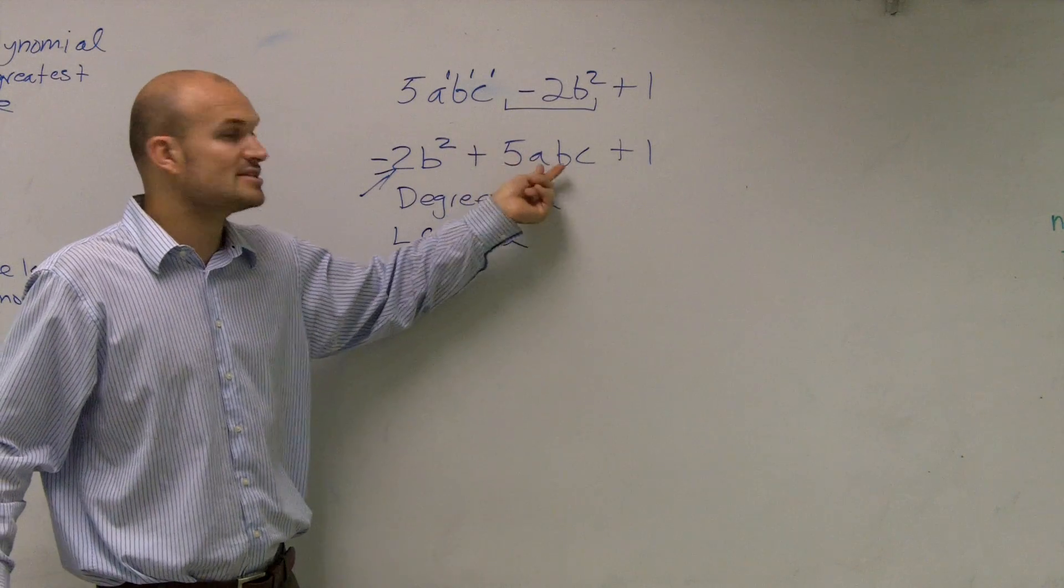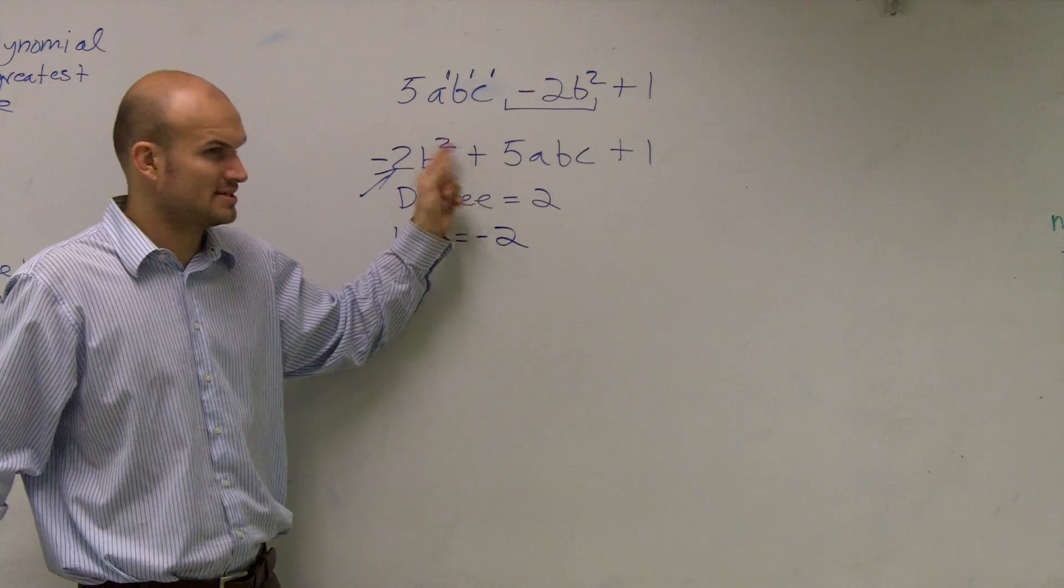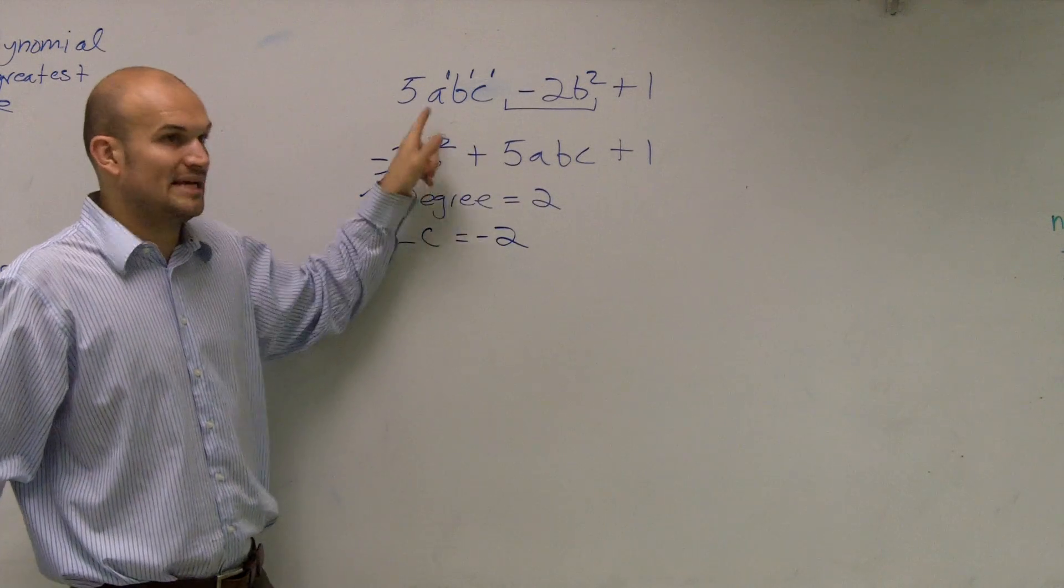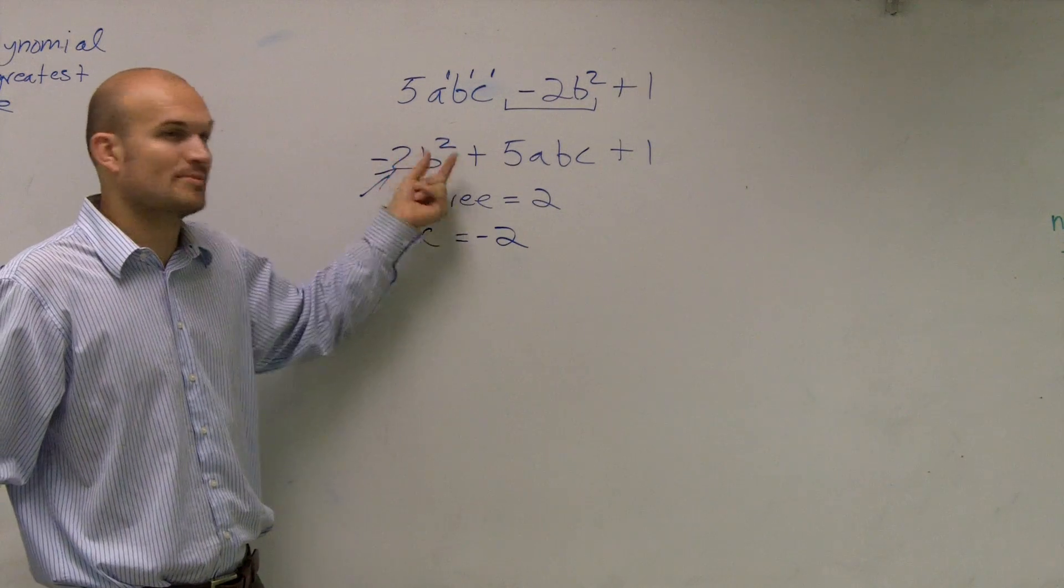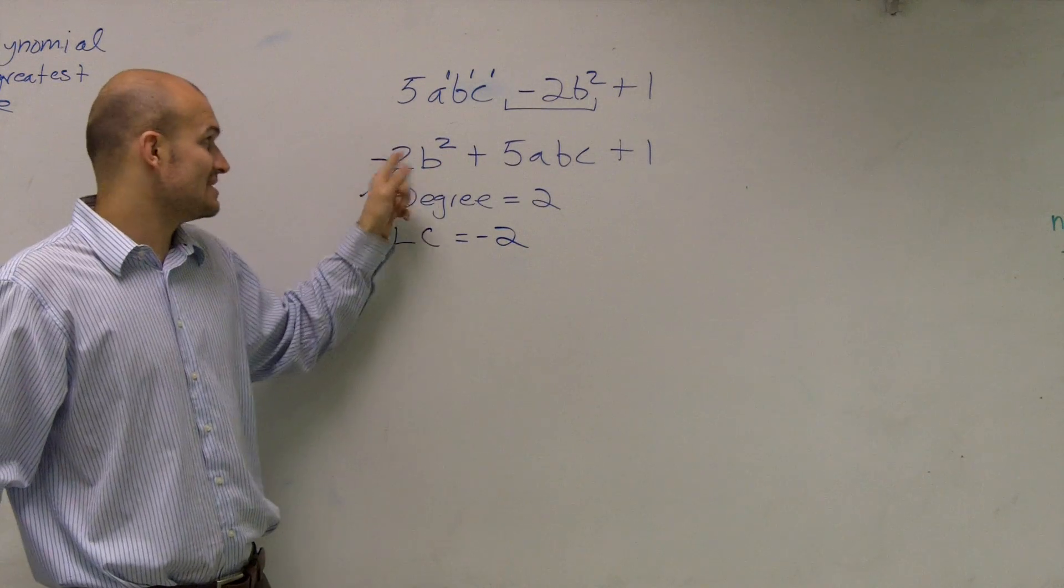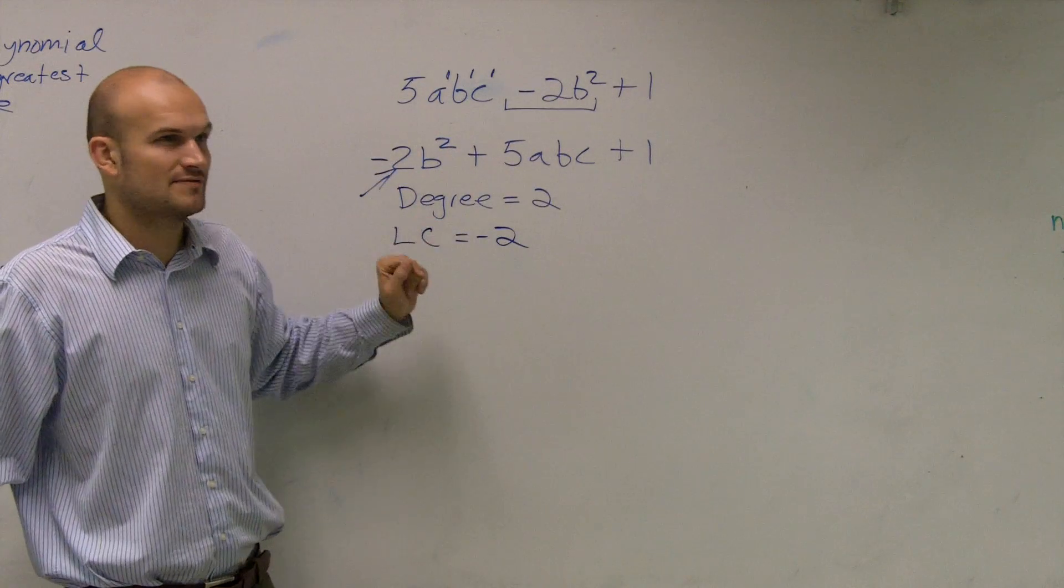Because to be in the front, you have to have the highest degree in your term. Does that make sense? So since this b has the highest degree, the negative 2 gets to be put in front. This term gets to be put in front. So since this is now the leading term, my 2 is my degree, and my leading coefficient is negative 2. Make sense?